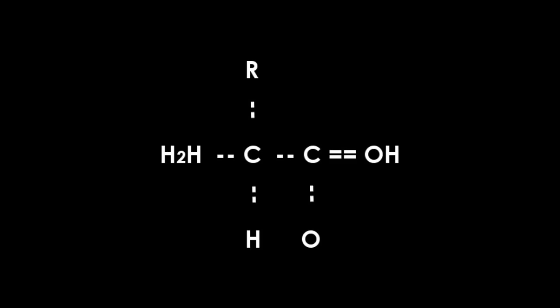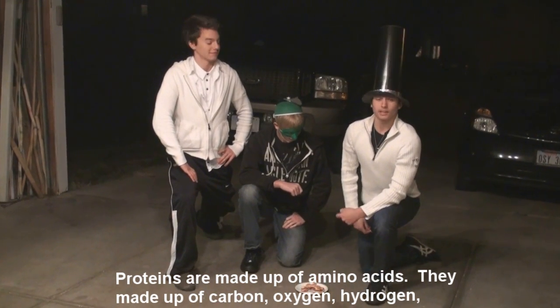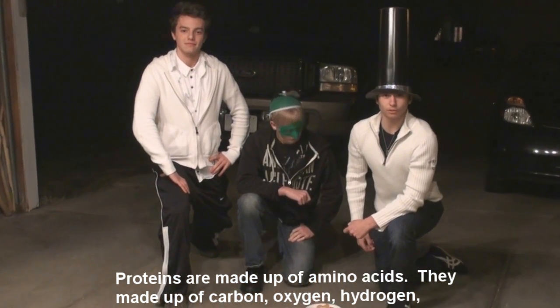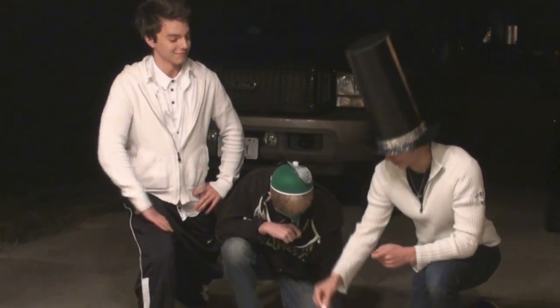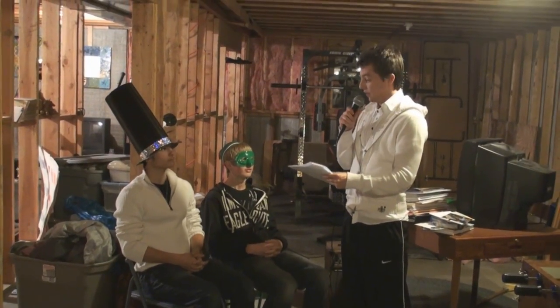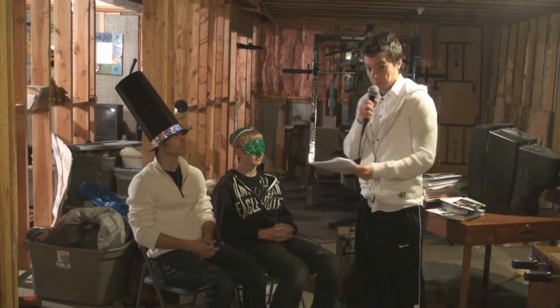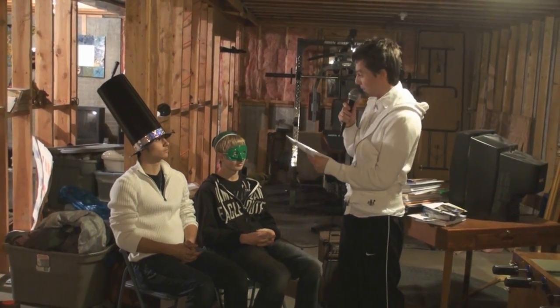Amino acids all have the same general structure. Proteins are made up of amino acids. They are made up of carbon, oxygen, hydrogen, nitrogen, and sometimes even sulfur. When an amino group of one amino acid combines with the carboxyl group of another amino acid, the linkage forms proteins. This link is called a peptide bond. These link with others to form a polypeptide.